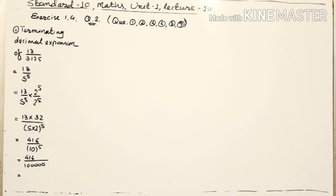The value of 10 raised to 5 is 1 lakh. Now if I want to write it in decimal form, I have to write a total of 5 digits after the decimal point. I have 3 digits in the numerator, and for the remaining 2 digits I will put zeros. So the answer is 0.00416, which is the terminating decimal expansion of 13 upon 3125.